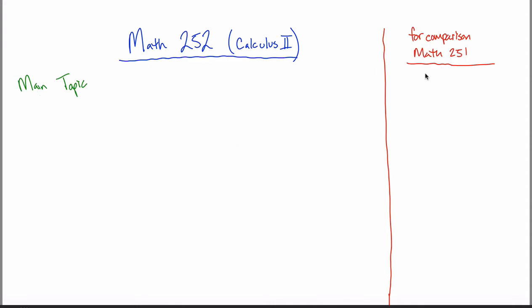In Math 251, Calculus 1, the main topic was the derivative. Pretty much everything you did in that class was focused around this idea. In some sense, the whole course was: if I give you a function f of x, can you tell me the derivative f prime of x? You had to learn limits, figured out different ways to get the derivative, and did all sorts of applications — but it was all based around the one idea of the derivative.